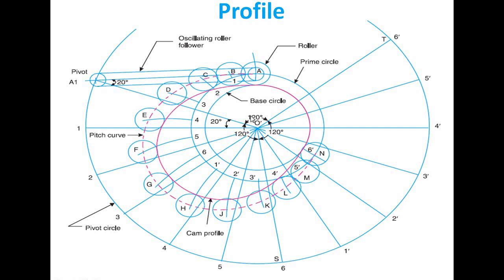Take the distances from the displacement diagram — A0, 1B, 2C, 3C, etc. — to get different points. Draw a circle (roller) from each point. After completing this, draw a smooth curve using a French curve or freehand to touch each circle at the bottom and complete the cam profile. This is the oscillating cam profile. For any queries, comment on my YouTube channel. Thank you.